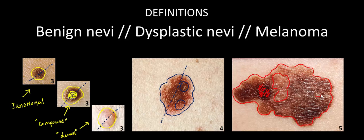All of this clues you in to the fact that there's some abnormality and potentially a malignant process going on histologically. To wrap up, keep these distinctions among these lesions in mind as you watch the next video, in which you'll be introduced to a pretty neat mnemonic that helps you distinguish benign nevi from more dysplastic nevi and melanoma.